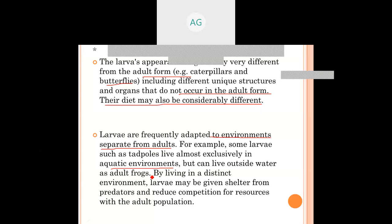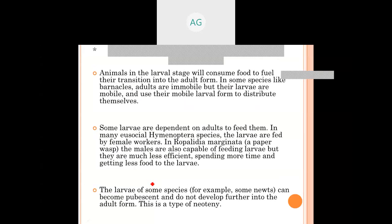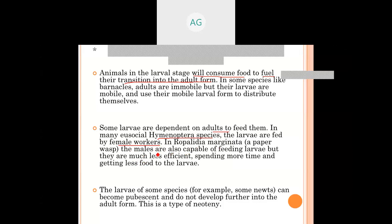The larva appears in a very different form from the adult. Caterpillars of butterflies are very different from the adult butterfly. Larvae have a unique structure not found in adult form, and their diet is also different — adults feed on one thing and larvae on another. Their environments can also differ. Food is consumed by larvae to fuel the energetically demanding transition from larva to pupa to adult. Some larvae are dependent on adults to feed them, as in many Hymenoptera species such as wasps.